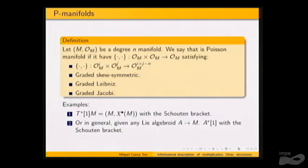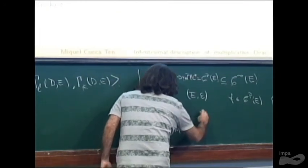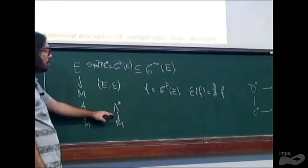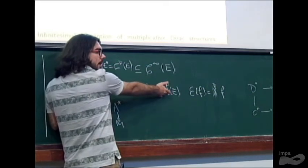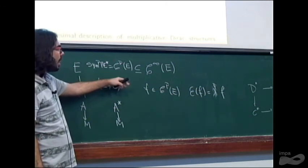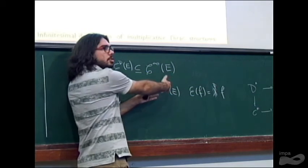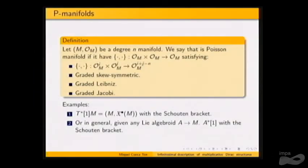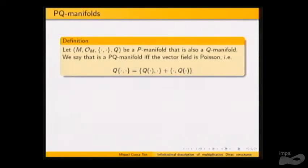Given any Lie algebra, the dual of the Lie algebra is a linear Poisson manifold, so functions on it carry a Poisson bracket. Analogously, given a Lie algebroid, the tangent bundle provides another important example. Putting together the Poisson structure and the homological vector field, we obtain a PQ manifold: a graded manifold with a Poisson structure and a vector field that is Poisson.